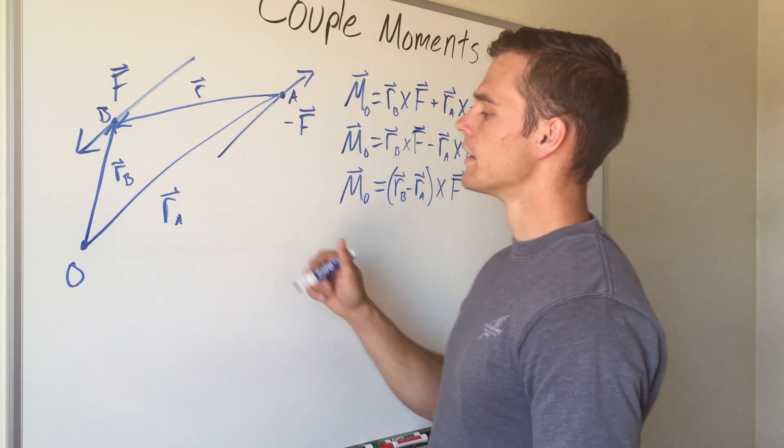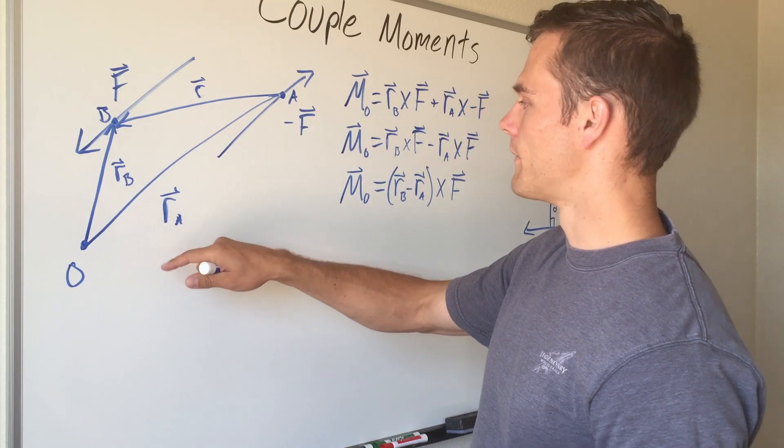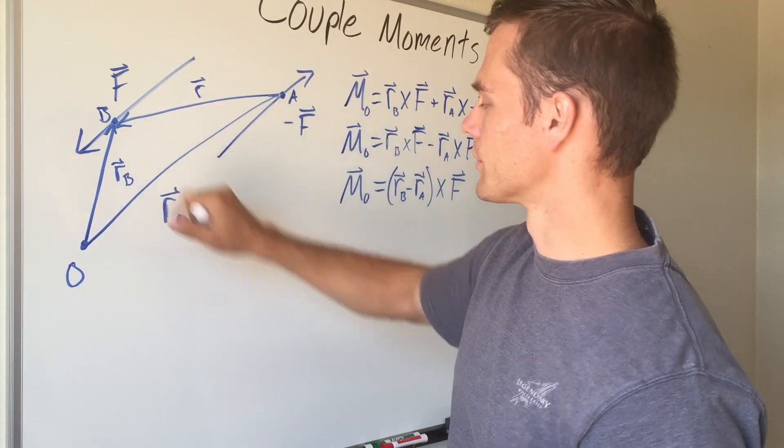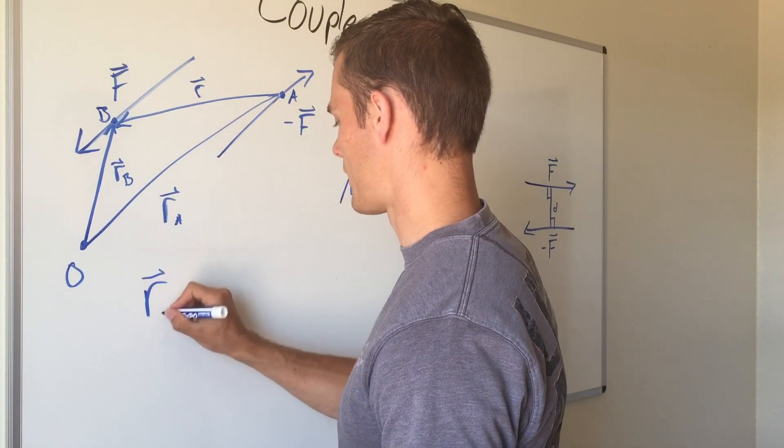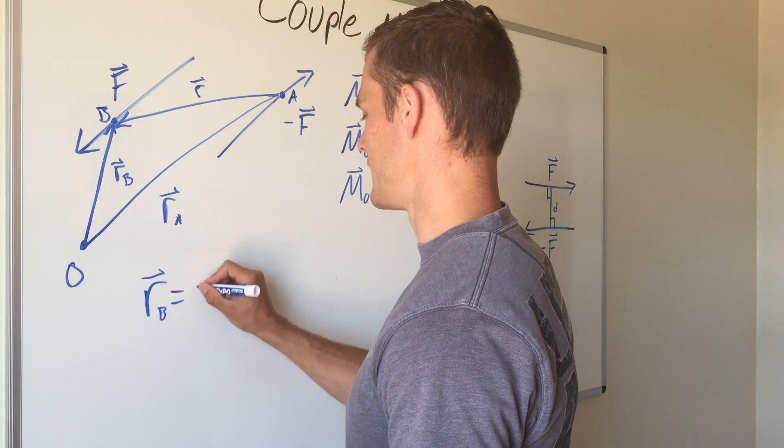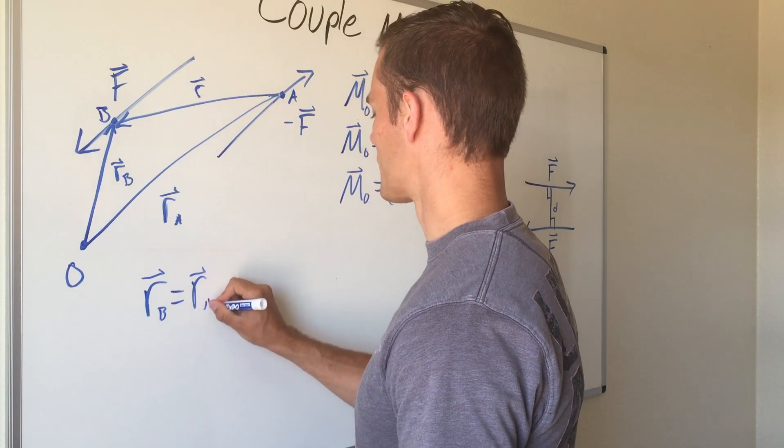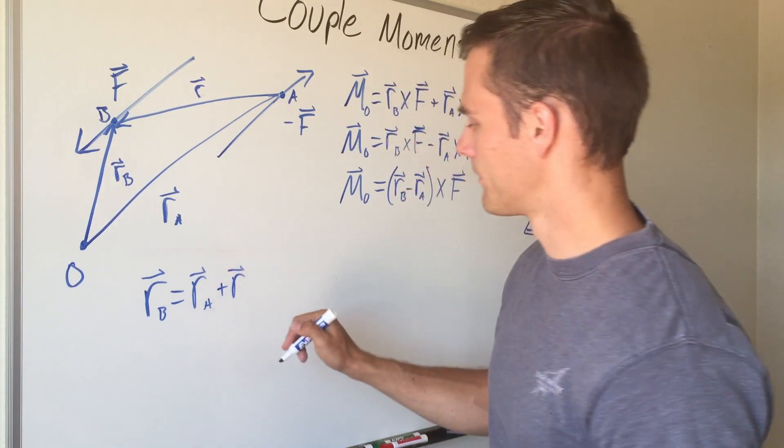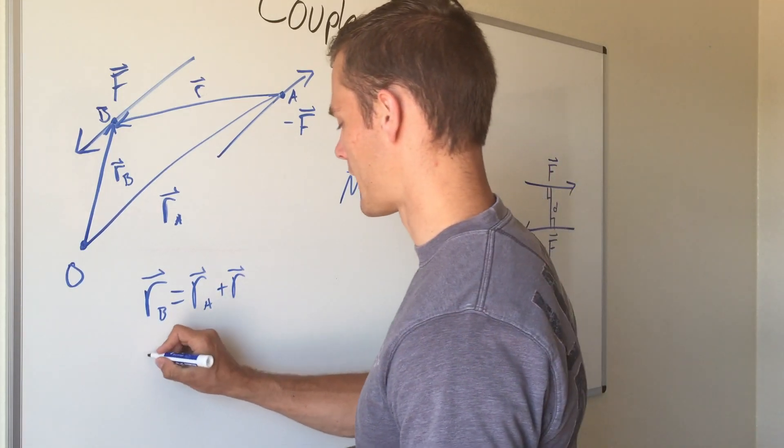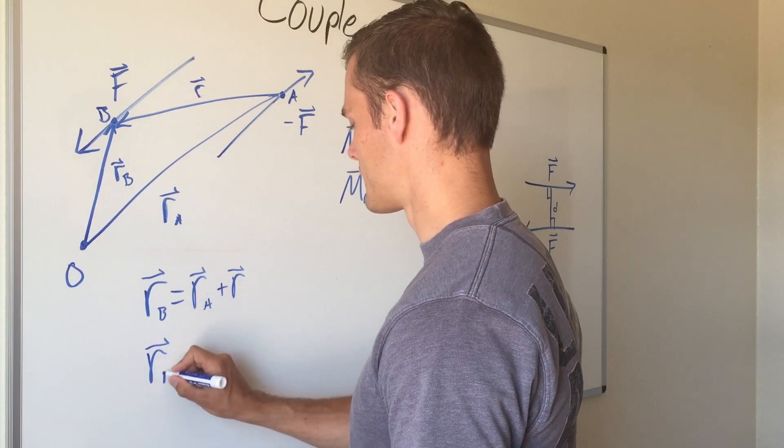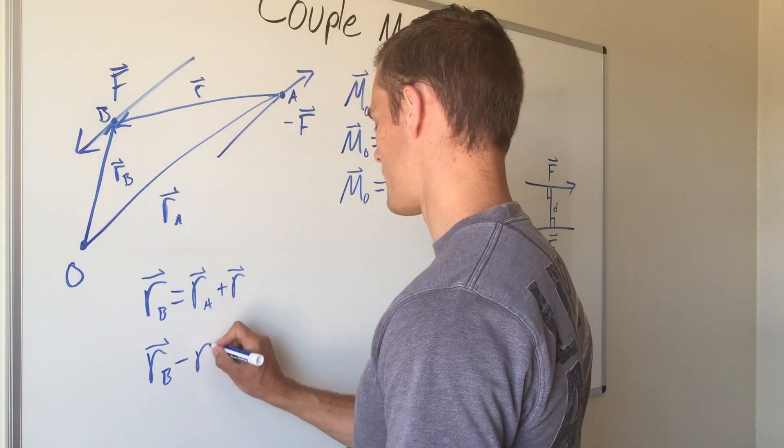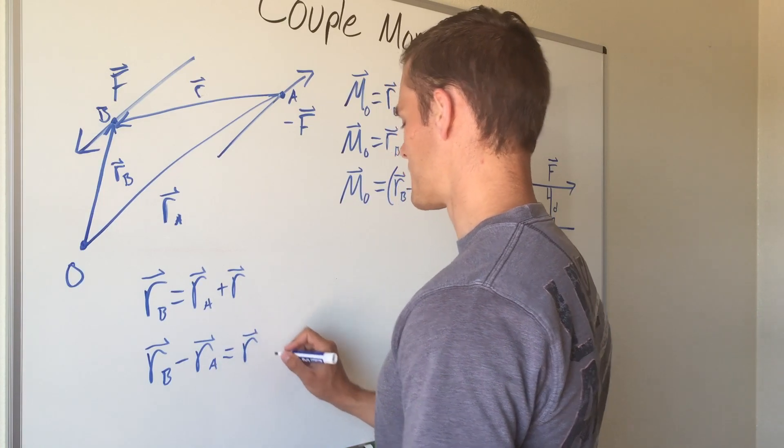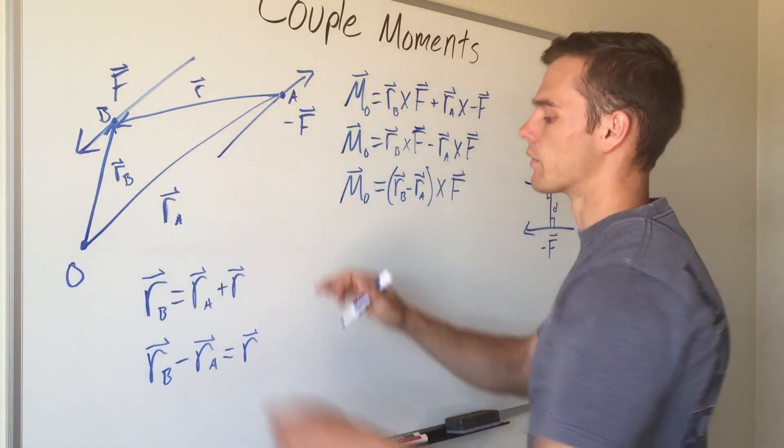We can note here using the basics of vectors that r sub A plus r equals r sub B. So we'll write that out as r sub B equals r sub A plus our vector r. We'll subtract r sub A to the other side and we'll get r sub B minus r sub A equals our position vector r that's going between our two forces.